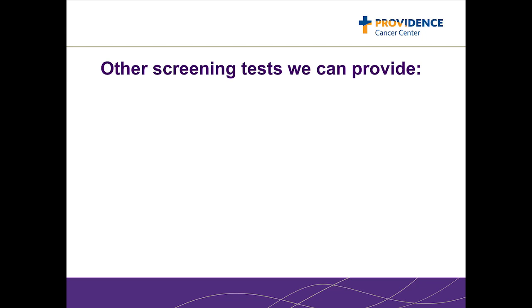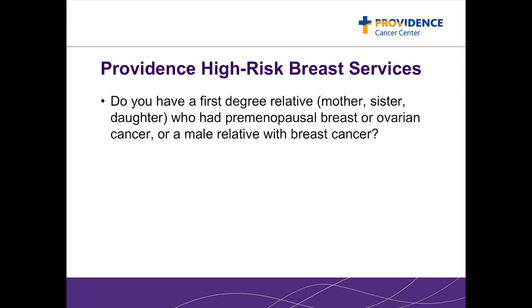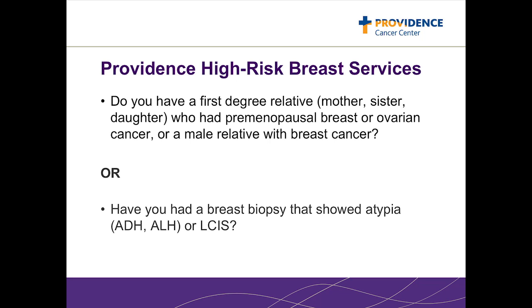Additional screening options include ultrasound or MRI. If you have a mother, sister, or daughter who had premenopausal breast or ovarian cancer, or a male relative with breast cancer, or if you have had a history of atypical cells on previous breast biopsy, you may benefit from a breast cancer risk assessment.